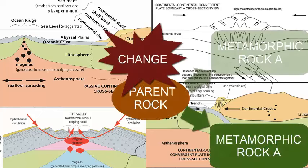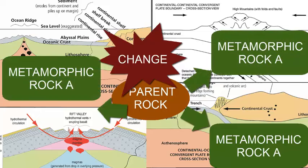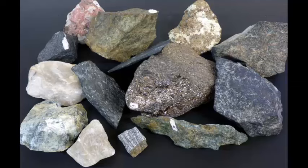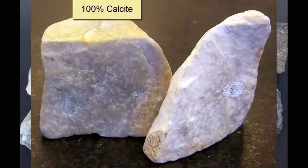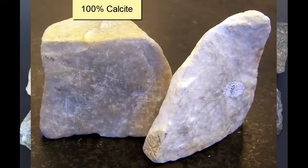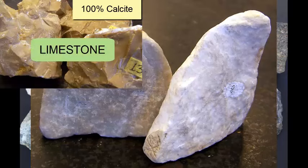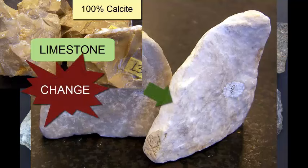In that case, studying the metamorphic rock will not give us any information on metamorphic setting, only the original parent rock material. For example, in this pile of metamorphic rocks, there is one that is made almost entirely of calcite, or a magnesium-rich related mineral known as dolomite. When a calcite-rich rock, such as limestone, is exposed to increased pressure or temperature, the crystals grow larger.